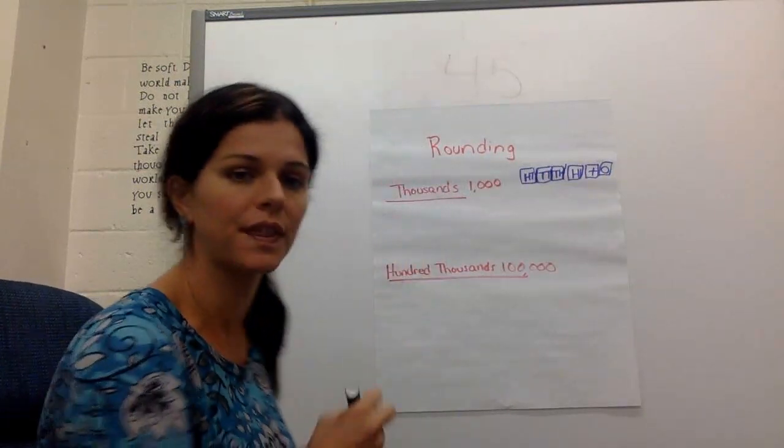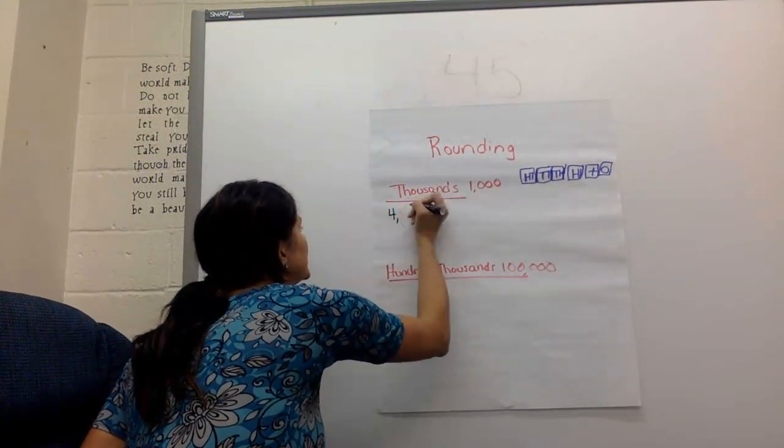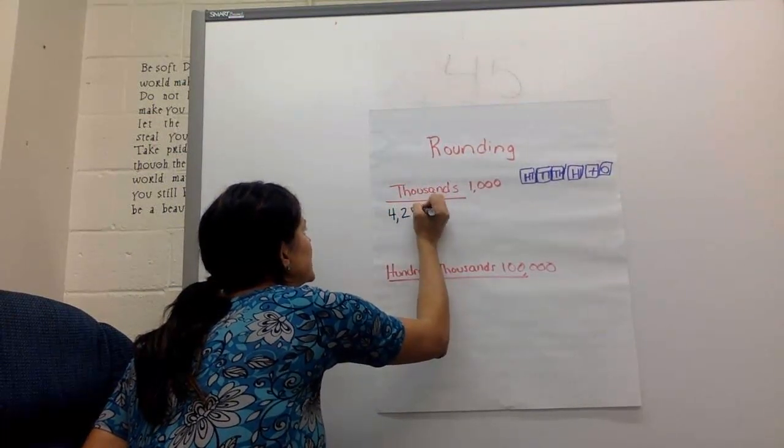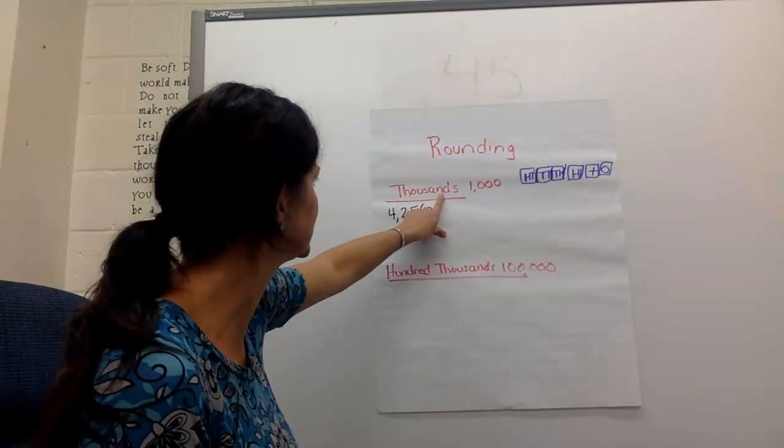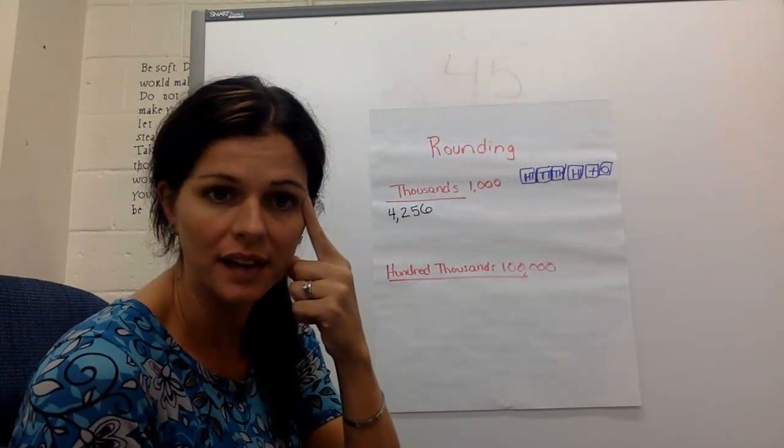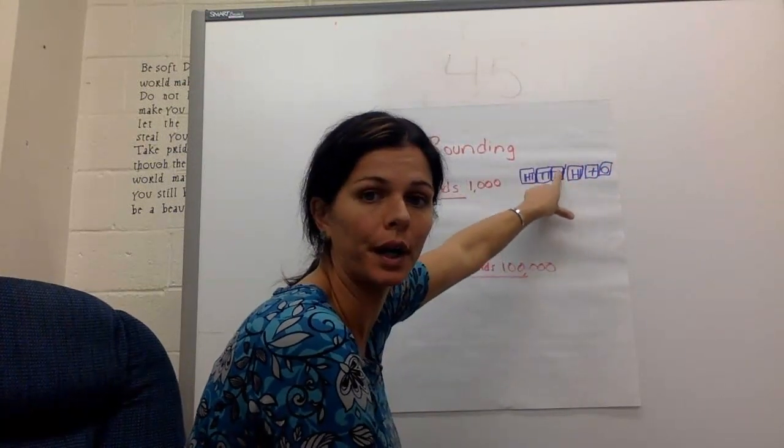So let's do the number 4,256. And it's saying we want to round to the thousands. Now if you forget where the thousands are, you can use your little cheat sheet. One, tens, hundreds, thousands. It's the fourth number.